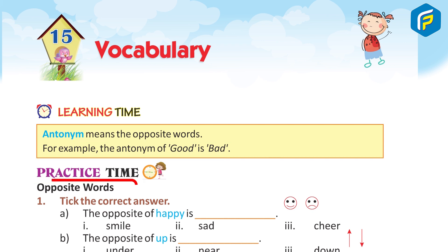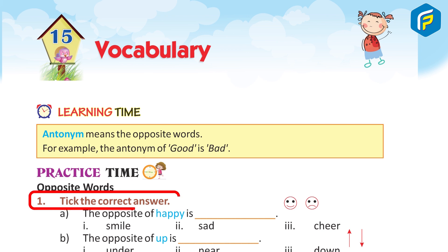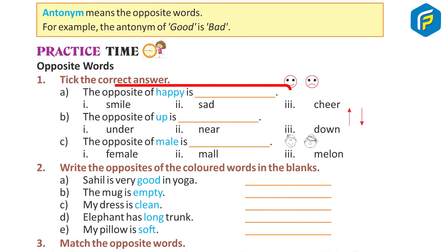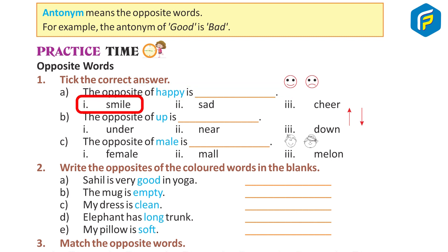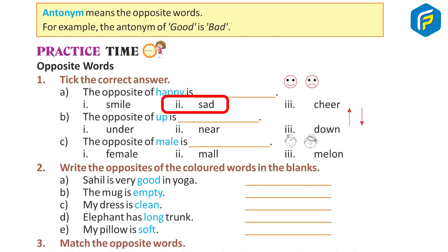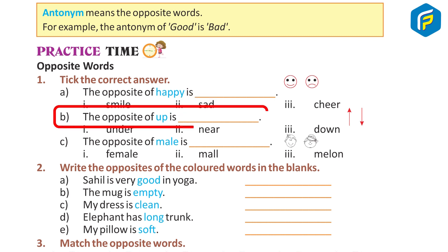Opposite word. One: take the correct answer. A — the opposite of 'happy' is: mild, sad, cheer. Answer: B — sad.